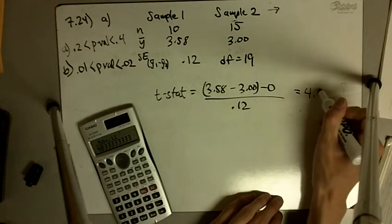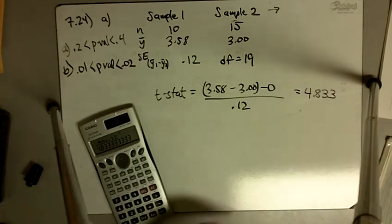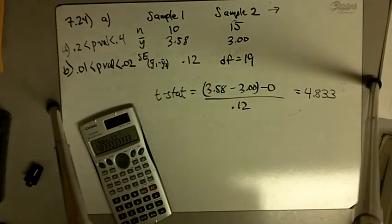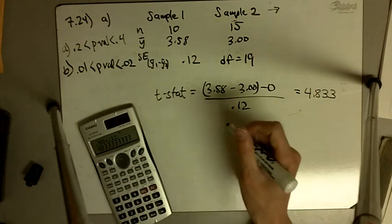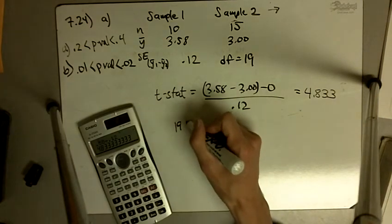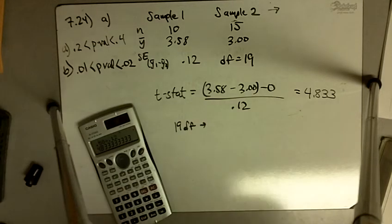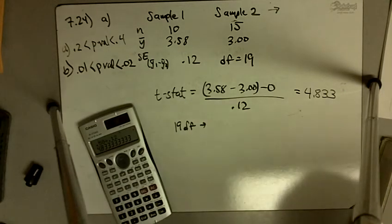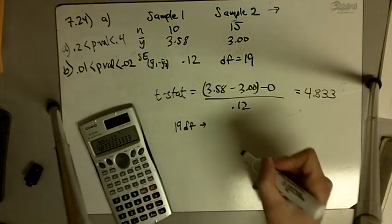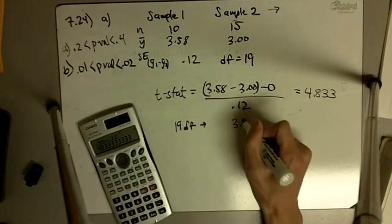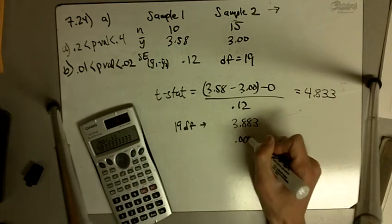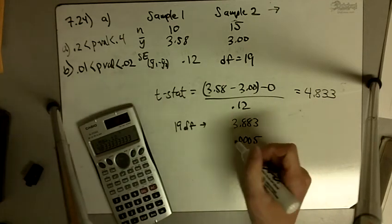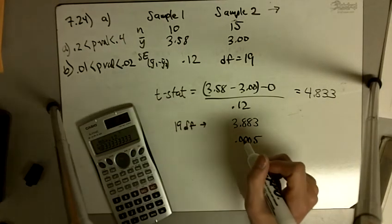4.833. We look up into our t-table with 19 degrees of freedom. 4.833, the closest number I can find is 3.883, and that corresponds to 0.0005. There's nothing beyond that.